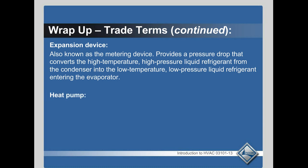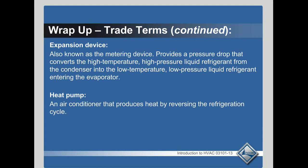Heat pump — this is a reverse cycle air conditioning system. It has a valve in there that reverses the refrigerant cycle so that in the winter time it is removing heat from the outdoor air and bringing it in, and in the summer time in cooling mode it is removing heat from the indoor air and taking it out.